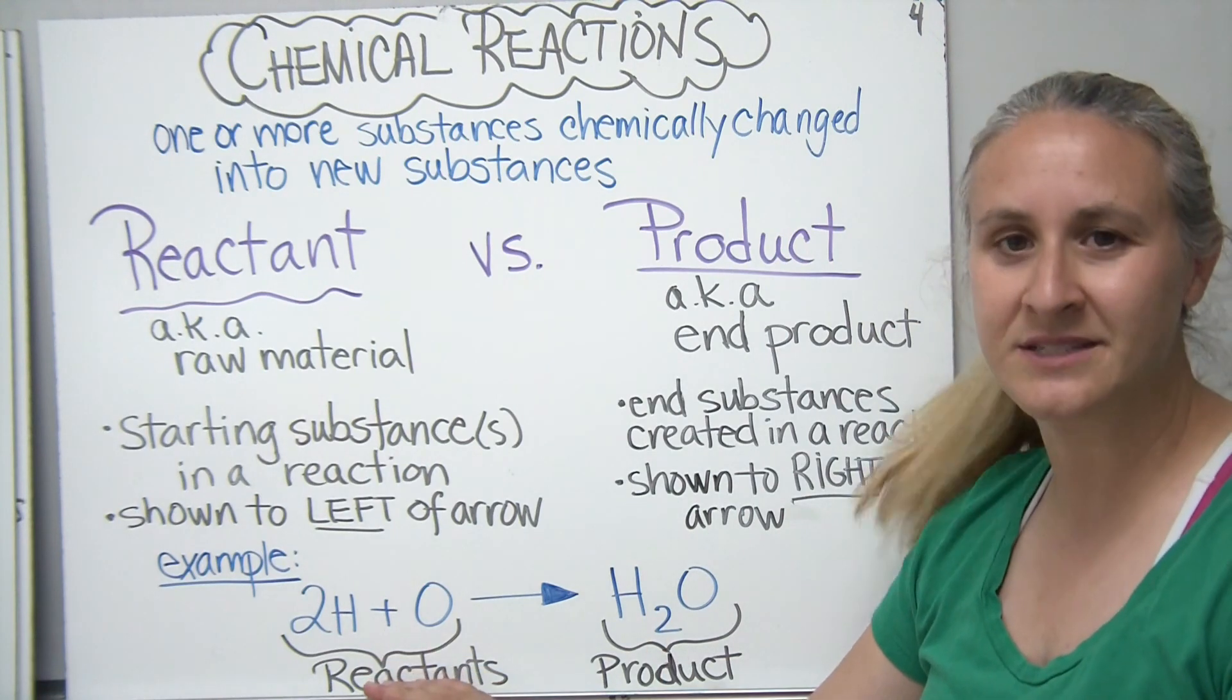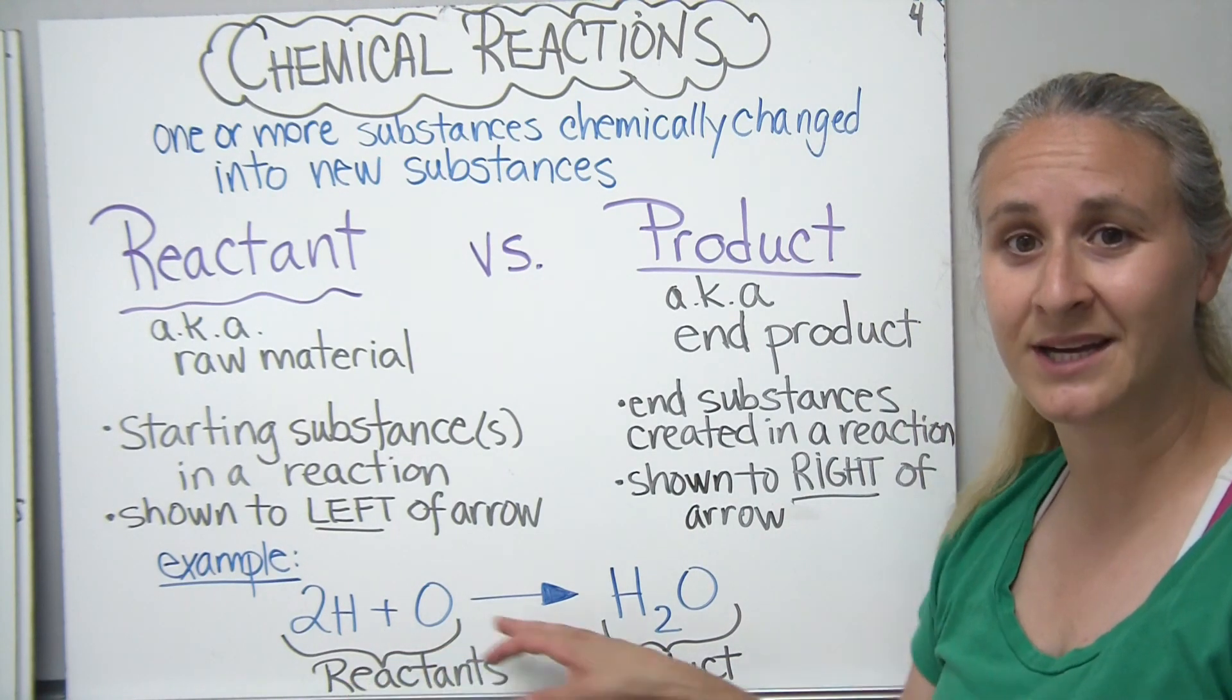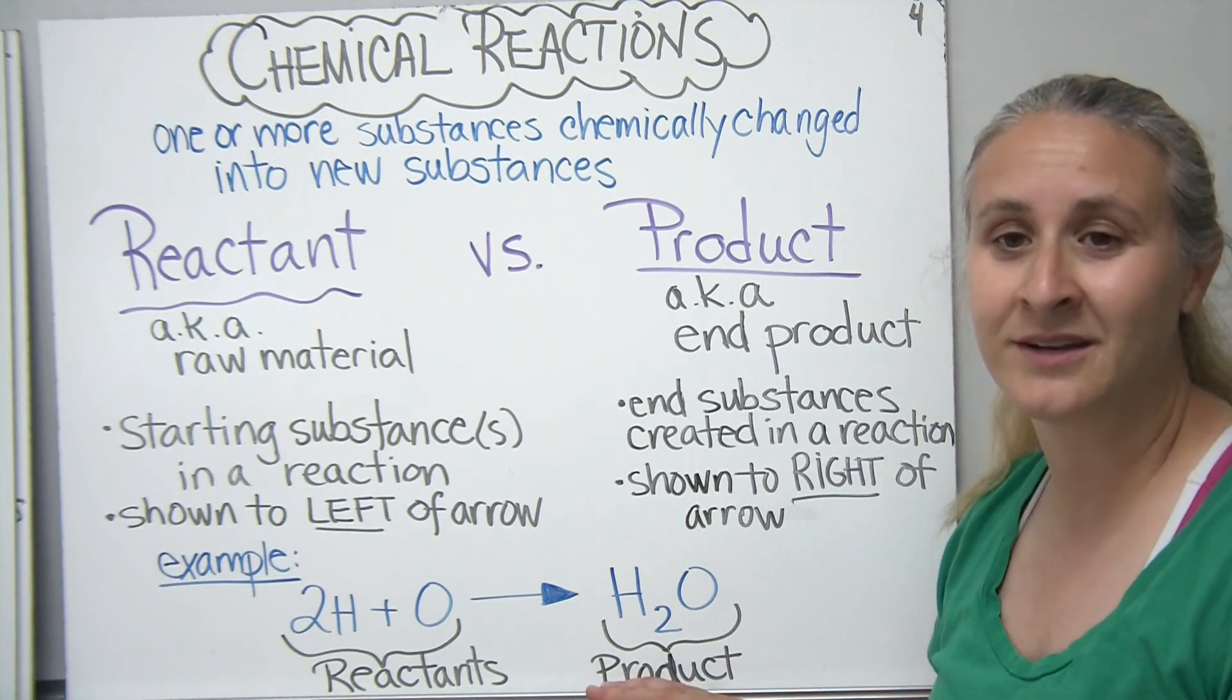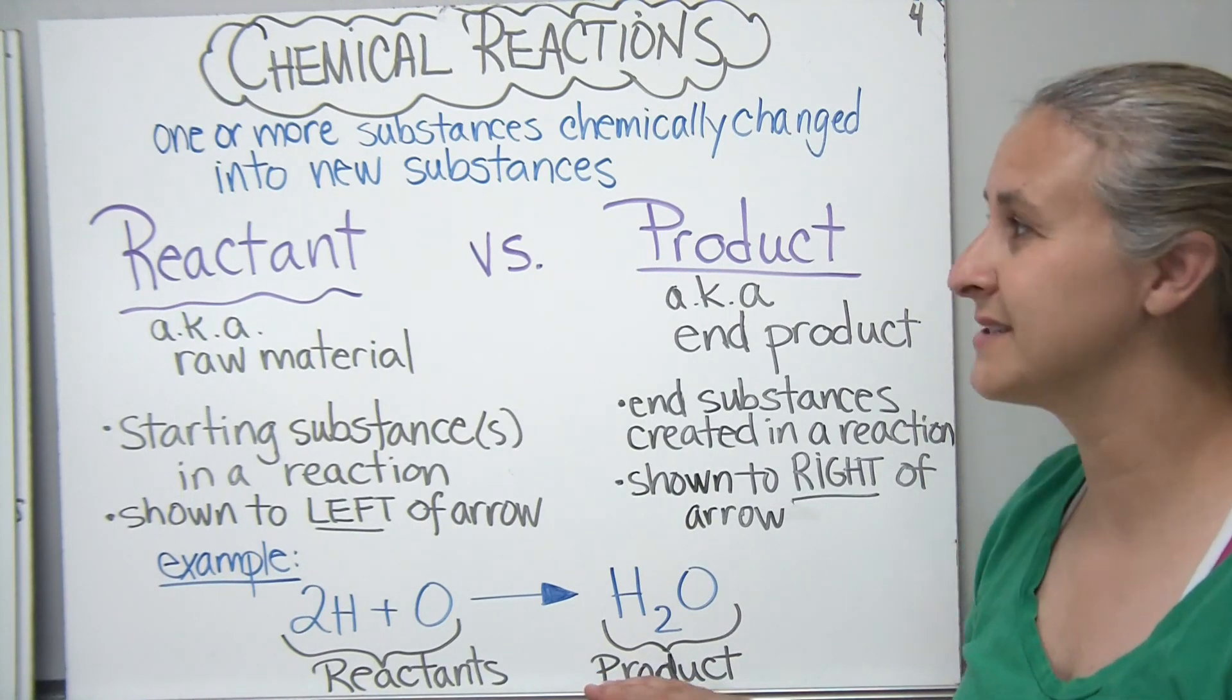You could maybe possibly only have one reactant that gets broken down into multiple products. Or it could be the other way around, like this one, where you have multiple reactants, and one product. In some cases, you may have multiple products as well.